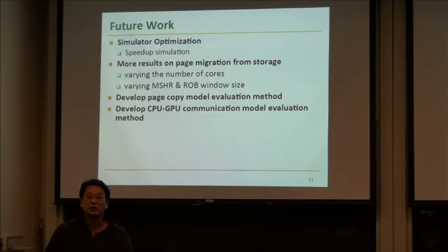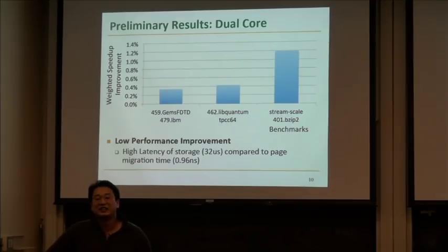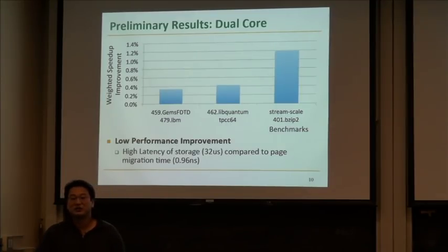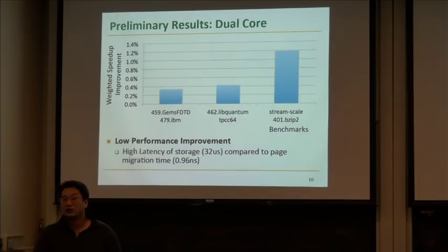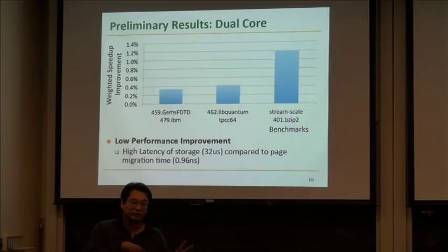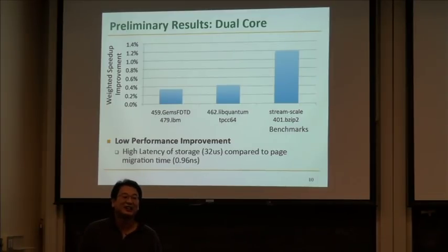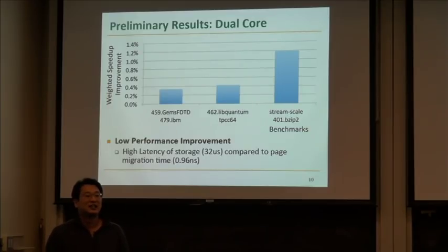That's it. An audience member questioned the results, specifically why page migration time looked like 0.96 nanoseconds. The presenter clarified: in the model, the system waits for the storage latency, then migrates one page from storage to DRAM using the DRAM cycle time. The value is actually 0.96 microseconds, not nanoseconds — that was a typo on the slide. The unit symbol was an upside-down U, meaning microseconds.